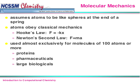Molecular mechanics is used exclusively for molecules of 100 atoms or more — actually that number should probably be more like 1,000, really big molecules. Proteins are really big molecules. Drugs are really big molecules. Many biological compounds in chemistry are large molecules with hundreds or thousands of atoms. We can't use more sophisticated methods like ab initio or DFT on molecules with many atoms, so when doing proteins or pharmaceuticals, molecular mechanics is the only feasible approach.